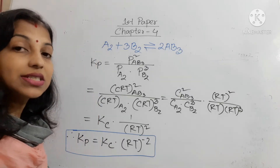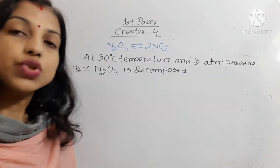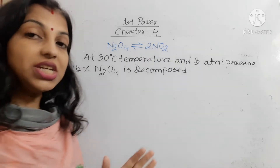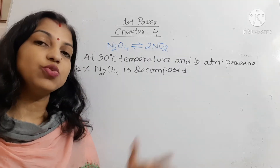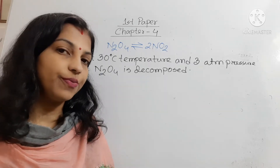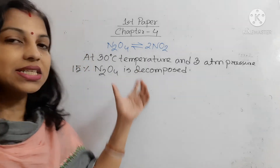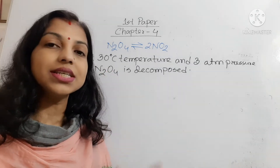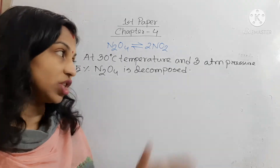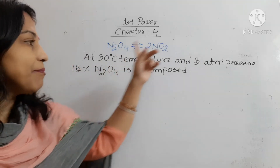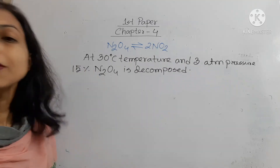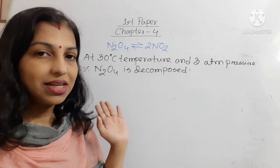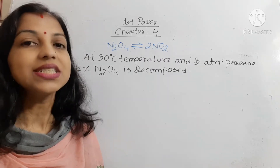Now students, we solve our second question. Our second question is: at constant temperature, if pressure is half for this reaction, then what will be the change of rate of decomposition of N2O4? We have seen that the reaction occurs at 30 degree Celsius temperature and 3 atm pressure, and at these conditions 15% of N2O4 is decomposed. Let's calculate the rate of decomposition when pressure is half.